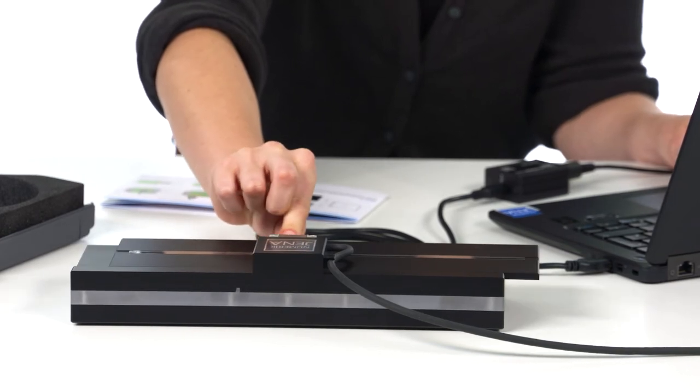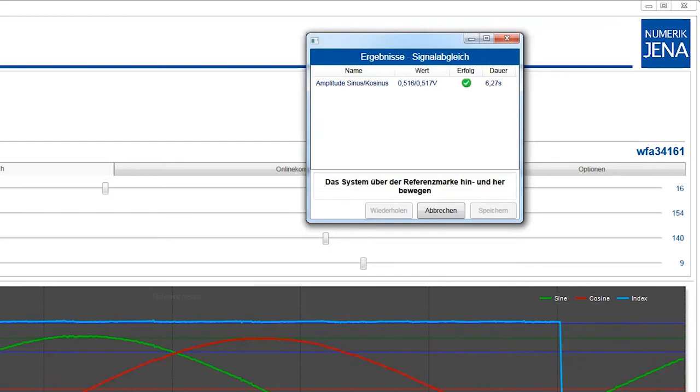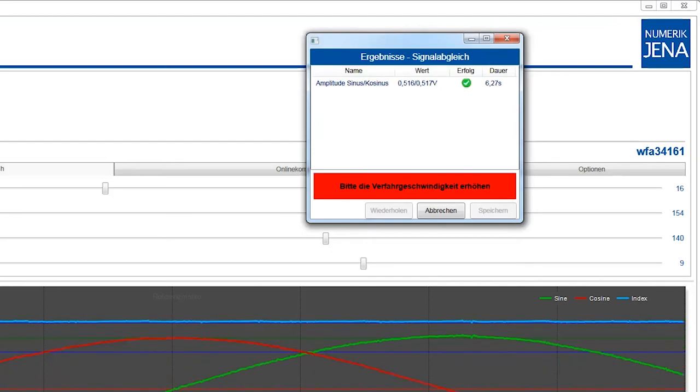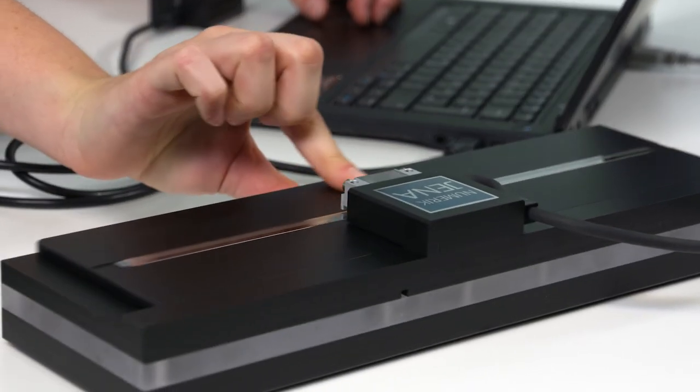If the system moves too quickly or too slowly during the adjustment, it is also indicated in the status window. If this happens, simply adjust the speed.